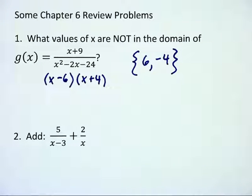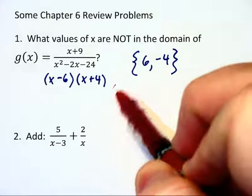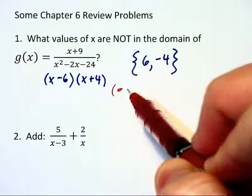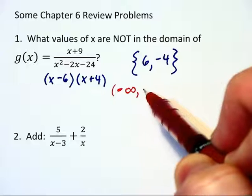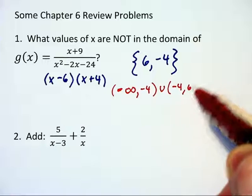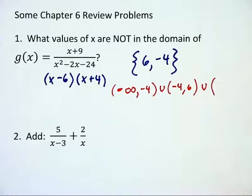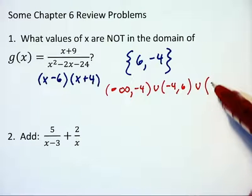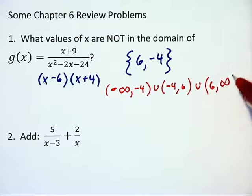Had they asked for the domain instead, then we would have said all values except those two values, and that would be from negative infinity to negative 4, united with the values between those two numbers, united again with the numbers off to the right from 6 to infinity.